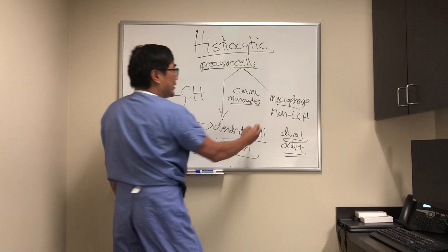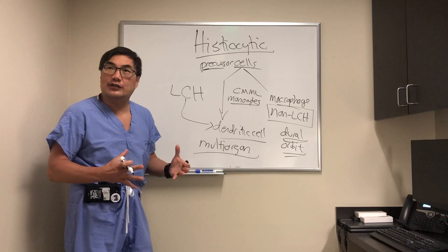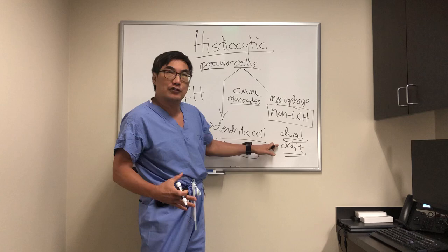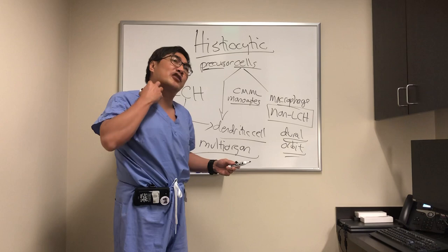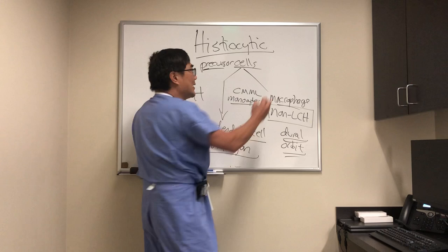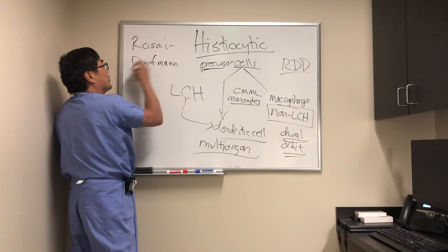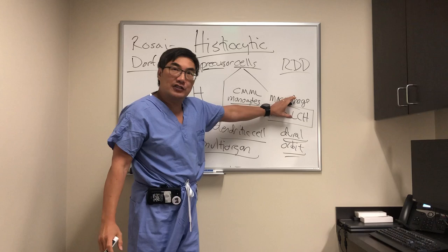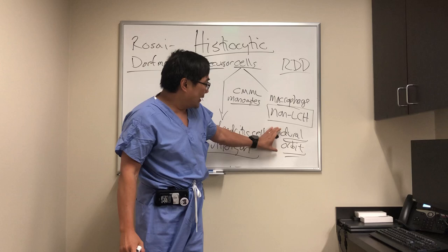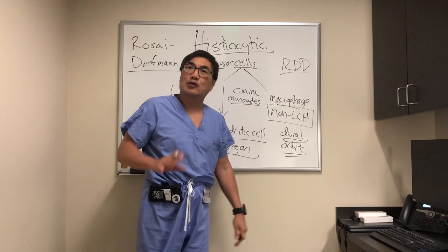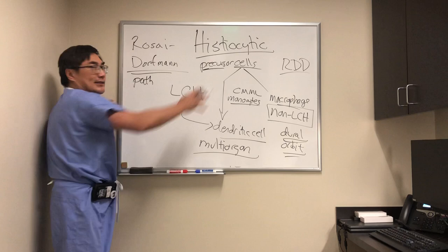In the non-Langerhans cell type, there is a special subtype called sinus histiocytosis with massive lymphadenopathy. If we're reviewing the chart of a patient with dural or orbital lesions and encounter imaging showing massive cervical, abdominal, or thoracic lymphadenopathy, that disorder is called Rosai-Dorfman disorder. It is a macrophage disorder of the non-Langerhans cell type characterized by massive lymphadenopathy, and sinus histiocytosis can present as dural-based infiltration or bilateral orbital masses.